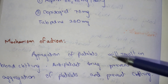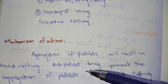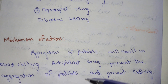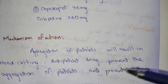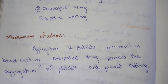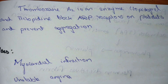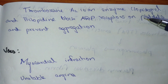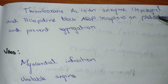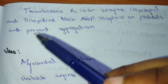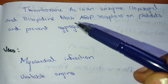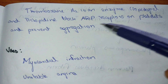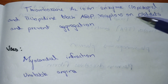This action is prevented by antiplatelet drugs, which prevent the aggregation of the platelet and prevent the clotting. Clopidogrel as well as ticlopidine block the ADP receptor on the platelets and prevent the aggregation.